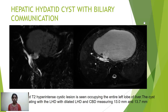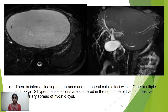On MRI, this was a case of hepatic hydatid cyst with biliary communication. A well-defined T2 hyperintense cystic lesion occupied the entire left lobe of the liver. The cyst was communicating with the left hepatic duct and the dilated left hepatic duct and common bile duct, measuring 13 mm and 13.7 mm respectively. There were internal floating membranes and peripheral calcific foci. Multiple small T2 hyperintense lesions scattered in the right lobe suggested endobiliary spread of hydatid cysts.